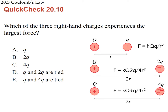For case 1, F = K·q·q / r². For case 2, the charge is doubled but the distance is also doubled: K·2q·q / (2r)² = K·2q²/(4r²) = (1/2)·K·q²/r² — half of case 1. For case 3, the charge is 4q and the distance is 2r: K·4q·q / (2r)² = K·4q²/(4r²) = K·q²/r² — the same as case 1. So cases 1 and 3 are tied for the largest force.